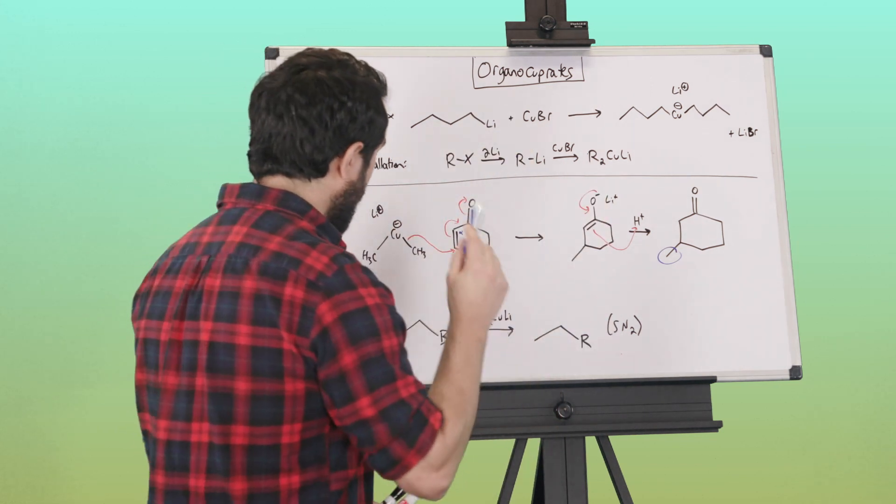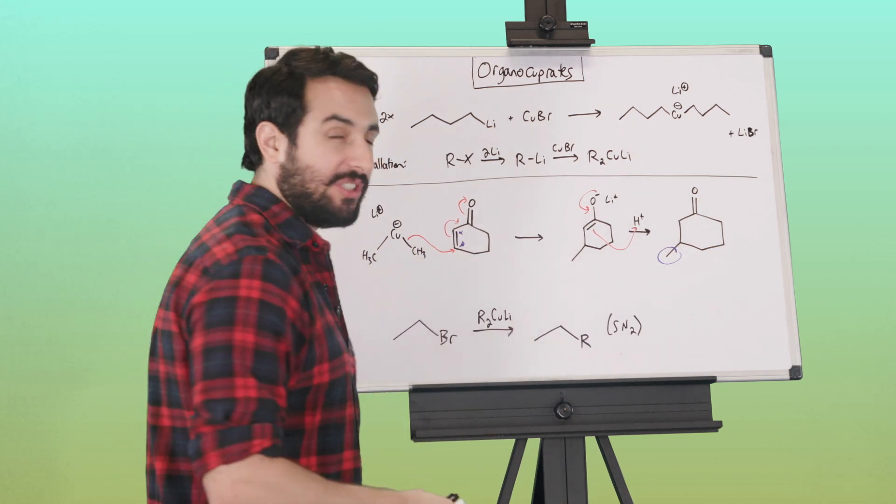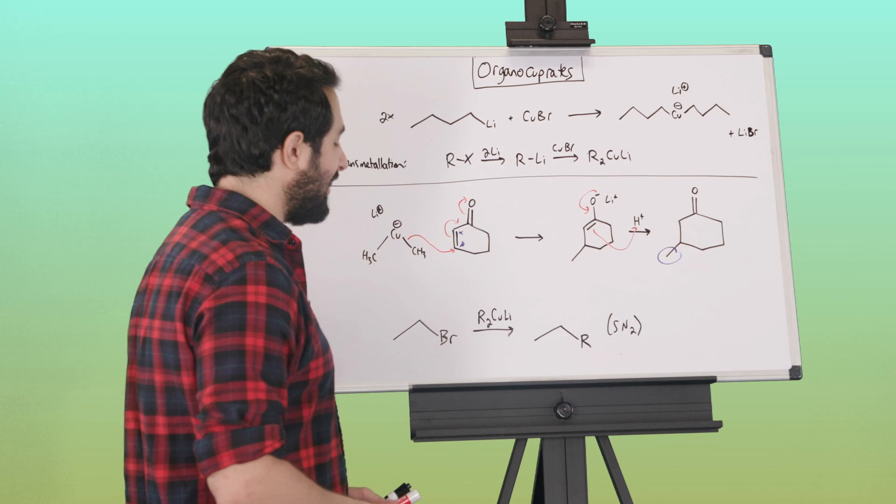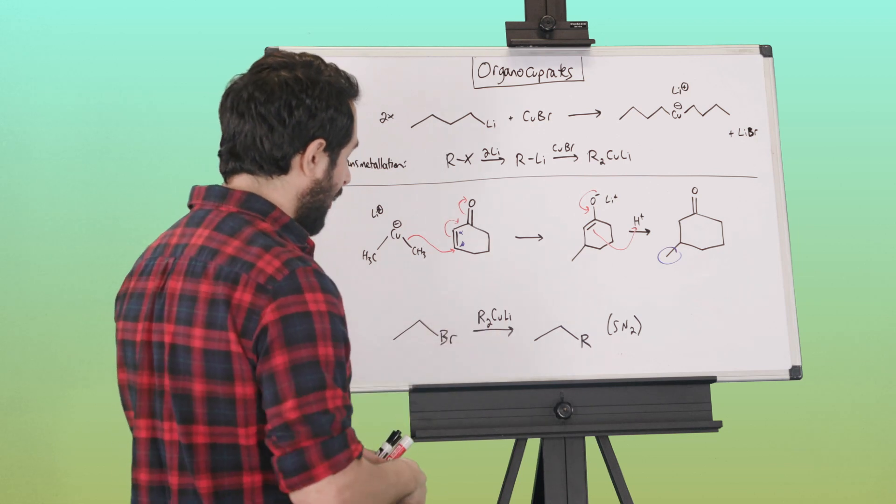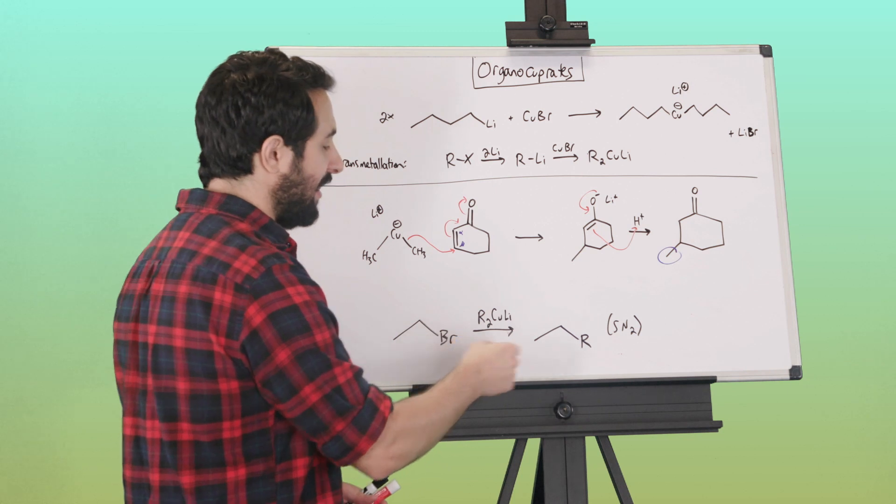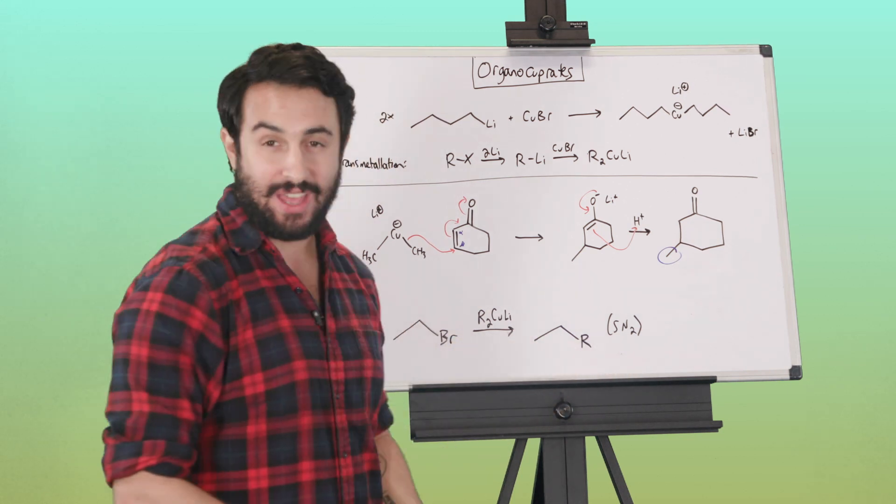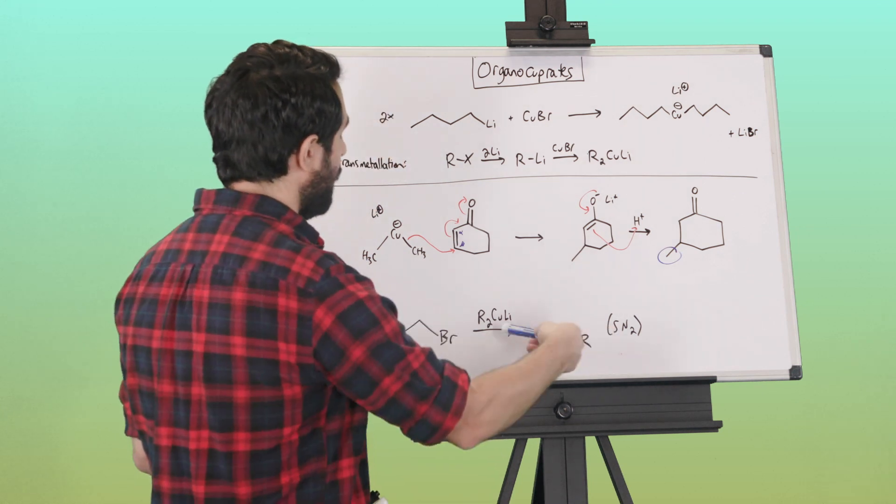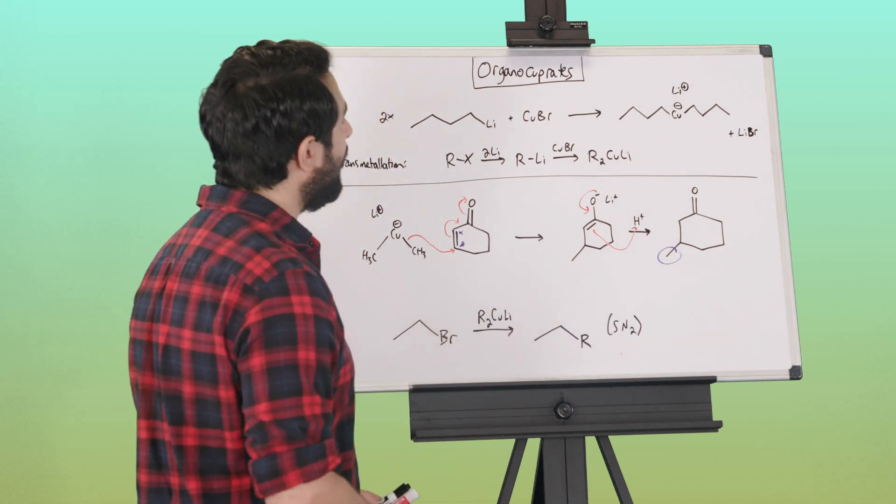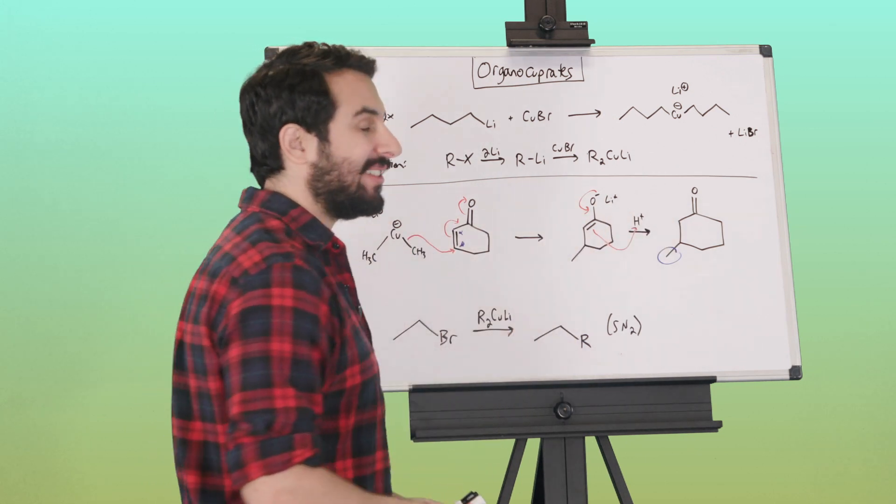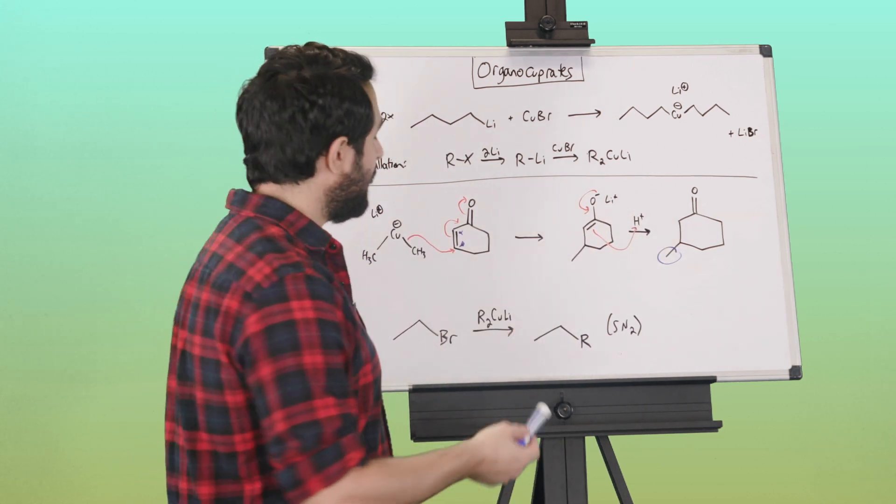Just to mention one alternate application here: we can do simple SN2. We can have the alkyl group attack here and just displace the halogen and just attach that alkyl group on there to make a longer alkyl chain. So this is just a very simple SN2 on an alkyl halide, but once again, this is the primary application: this kind of conjugate addition on some carbonyl-containing compound with an alpha-beta degree of unsaturation.